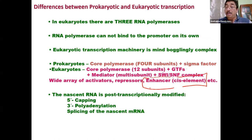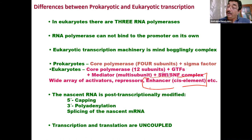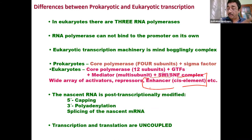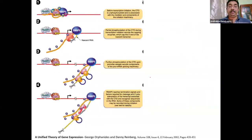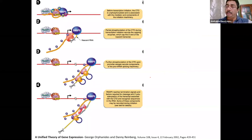The nascent RNA is post-transcriptionally modified: it is capped, polyadenylated, and spliced. For all of these, RNA polymerase post-translational modification status is important. Finally, transcription and translation are uncoupled in eukaryotes. In prokaryotes, transcription and translation happen simultaneously. In eukaryotes, transcription happens in the nucleus, then the RNA comes out to the cytoplasm where translation happens. There is a review article on RNA polymerase CTD phosphorylation coordinating transcription initiation, elongation, and post-transcriptional modification events — I would encourage you to read it.